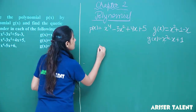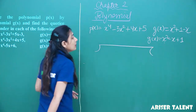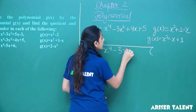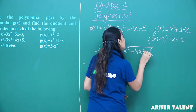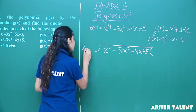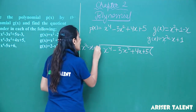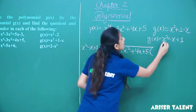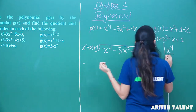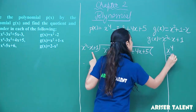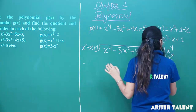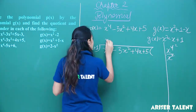As asked in the question, we have to divide. So we write x to the power 4 minus 3x squared plus 4x plus 5 here. We have rearranged it. Now x squared minus x plus 1 is the divisor. We divide x to the power 4 by x squared — the highest power here divided by the highest power here — and you get x squared.